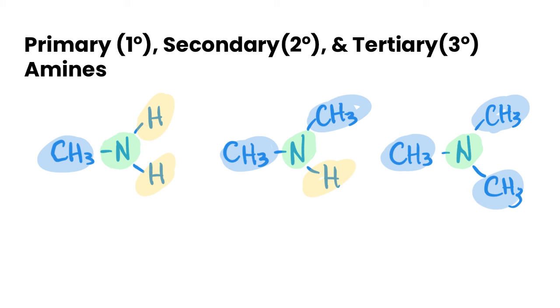If we look at the first one, it has one alkyl group attached to the nitrogen and two other hydrogens, or it has the form of R-NH2 with its alkyl group. This would be a primary amine.